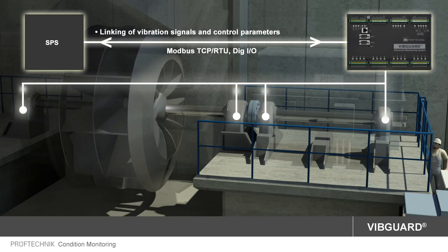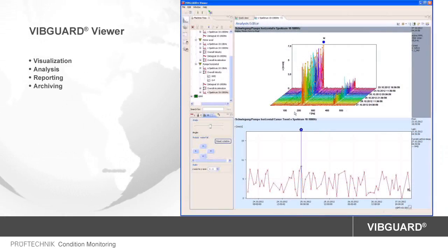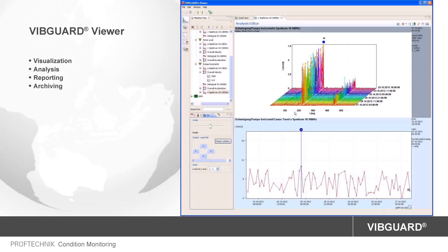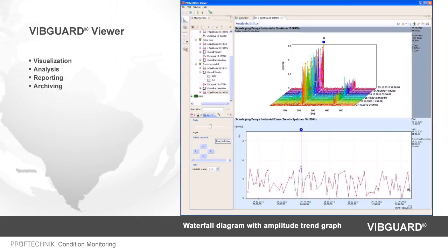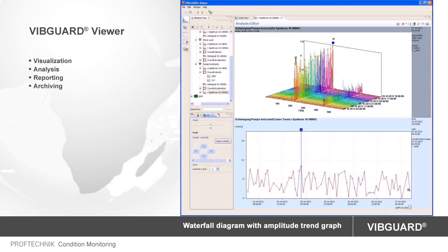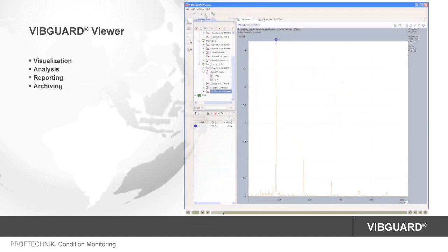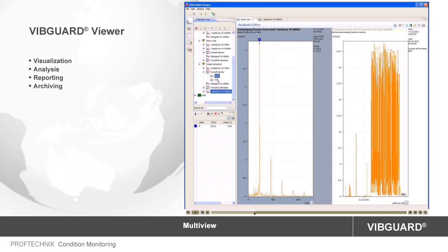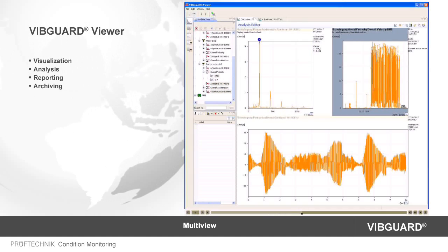A direct time link with the vibration parameters is established. The newly developed software, WIBGARD Viewer, configures the system and handles the measurement data. In addition to the reporting tool for creating individual event reports, the analysis tool features numerous functions for data analysis and visualization. With the combination of a waterfall diagram and an amplitude trend, you can very clearly visualize and analyze the course of particular frequency ranges. The multi-view function allows combined visualization of the spectrum, trend and time signal, independent of the measurement location.